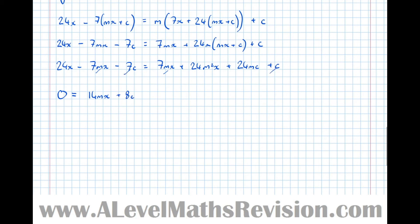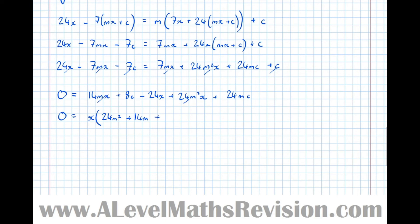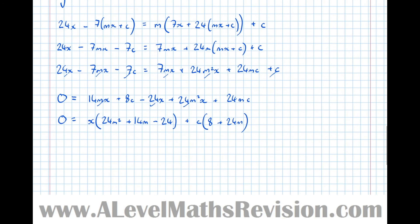Taking everything to the right-hand side to get zero on the left: the two 7mx terms combine to give 14mx; taking 7c over gives plus 8c; taking 24x over gives minus 24x; and we have plus 24m²x and plus 24mc. Gathering terms with x and terms with c: zero equals x(24m² plus 14m minus 24) plus c(8 plus 24m).